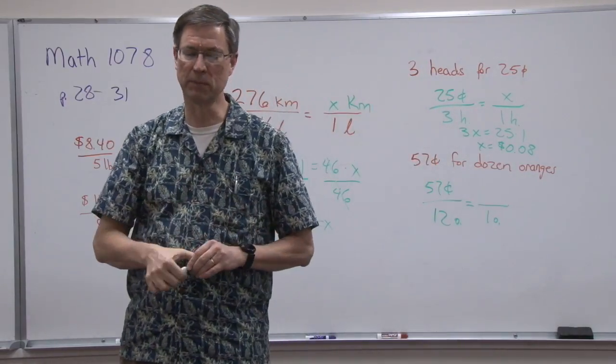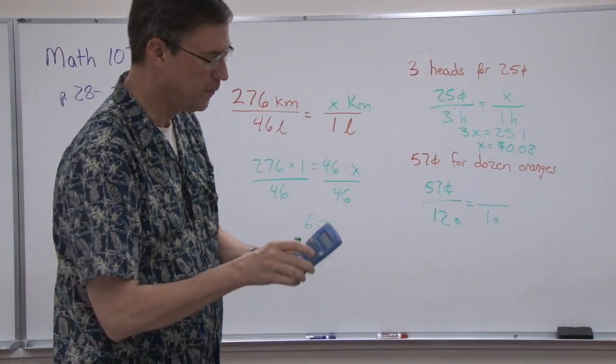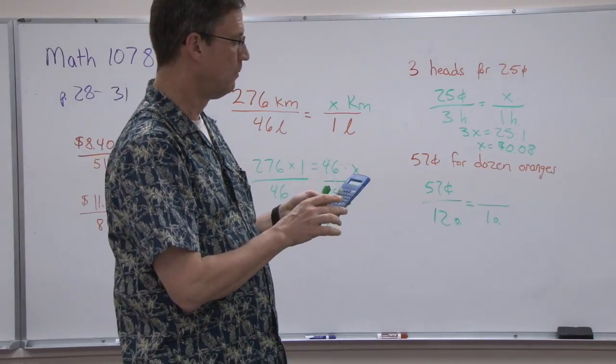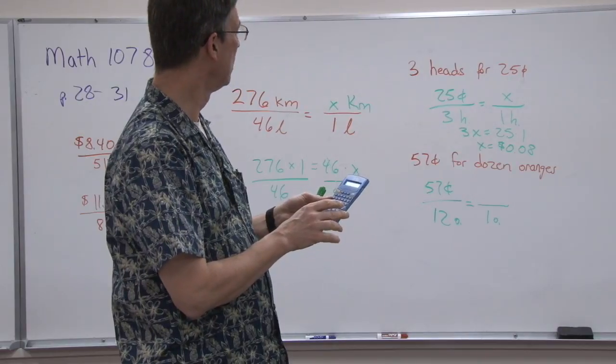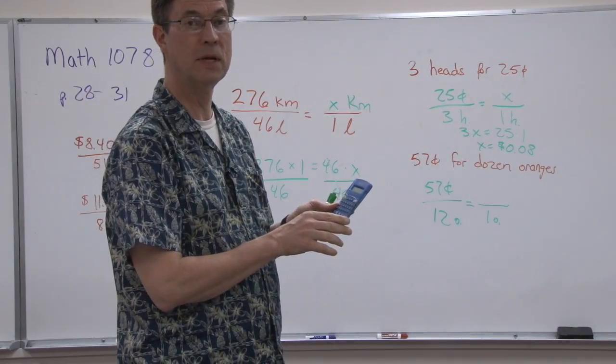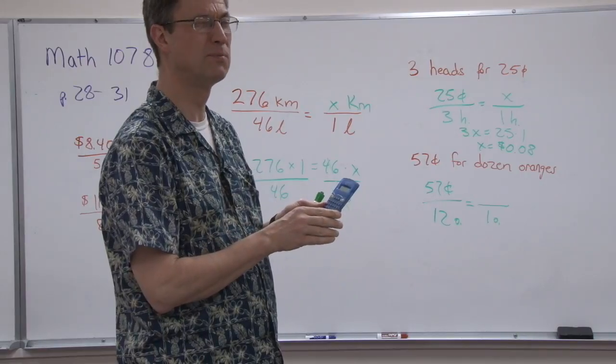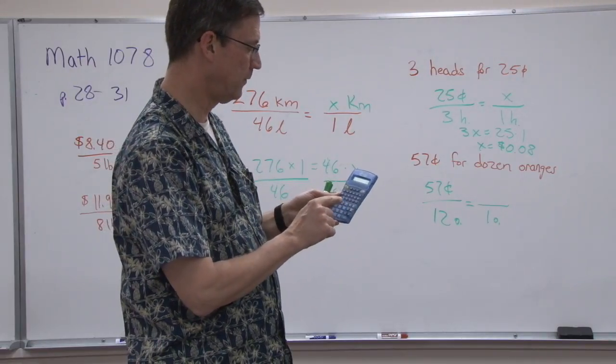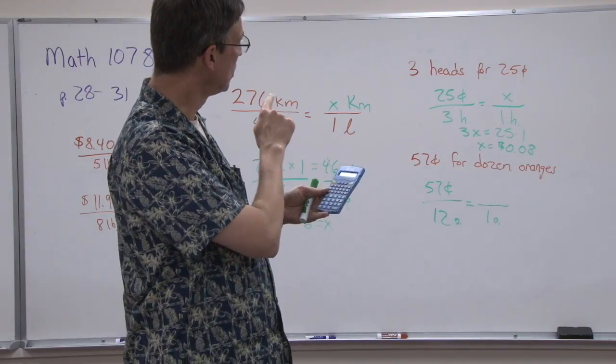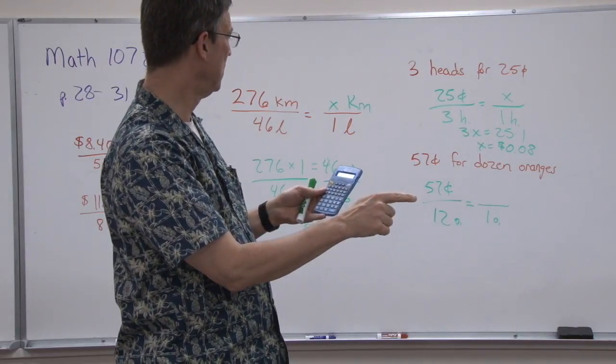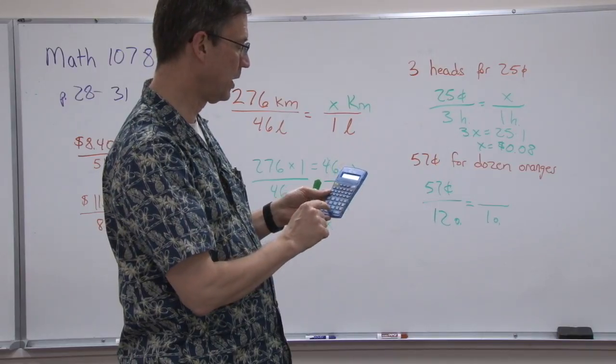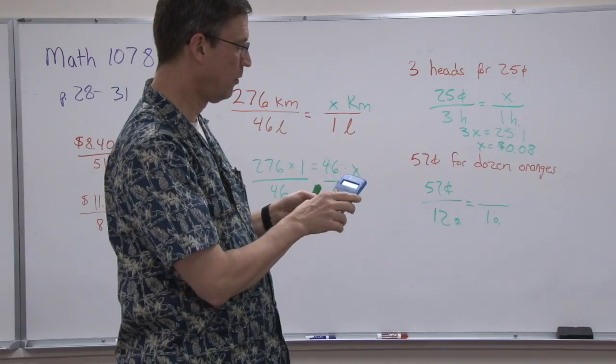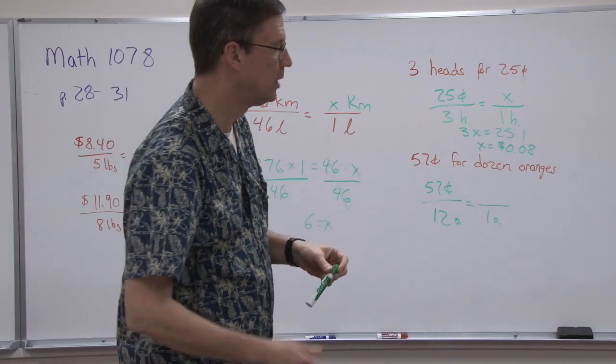Now we're going to figure out the price per orange. If your mom wants you to do this on paper, then don't cheat and use a calculator. But on the pace success website, I did tell your mom or supervisor that for some of these problems that might be a good idea. So I'm going to take the 57 cents and cross multiply times 1, and then take that and divide by 12. So 57 divided by 12 is 4.75 cents.